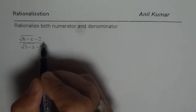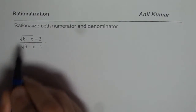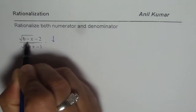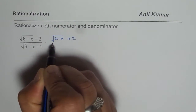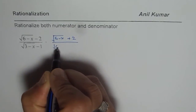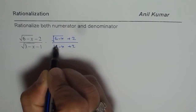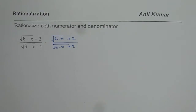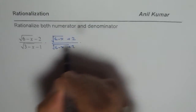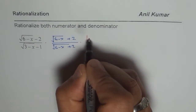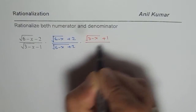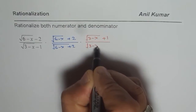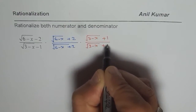To rationalize the numerator, I have to multiply and divide by the conjugate of the numerator, which is square root of (6 minus x) plus 2. To rationalize the denominator, I have to multiply and divide by the conjugate of the denominator, which is square root of (3 minus x) plus 1.